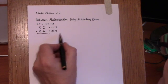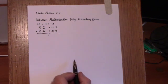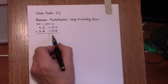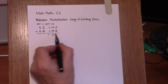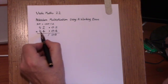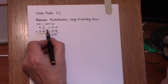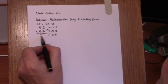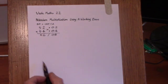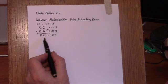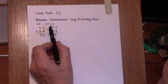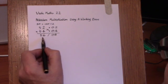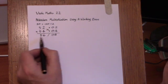The right-hand side is exactly the same as with ordinary Nikhilam multiplication. We multiply these two numbers together to get 08. And then we cross-add, either 54 add 2 or 52 add 4, in either direction, and get 56. And then, to finish off, we apply the proportionality divided by 2 to the left-hand part of the answer.